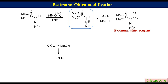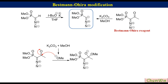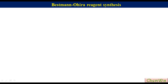Methoxide ion, generated by the reaction of potassium carbonate with methanol, adds to the carbonyl group of the Bestmann-Ohira reagent to produce an alkoxide ion, which then eliminates methyl acetate to produce the dimethyl diazomethyl phosphonate anion. The rest of the mechanistic steps are the same as in the Seyferth-Gilbert reaction.